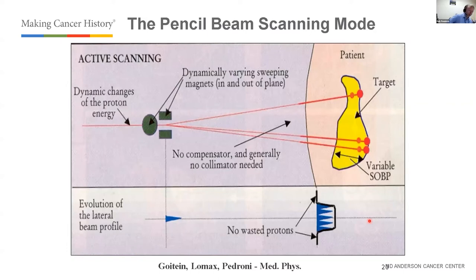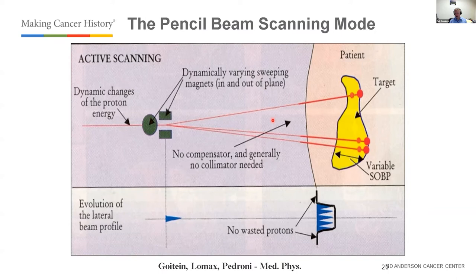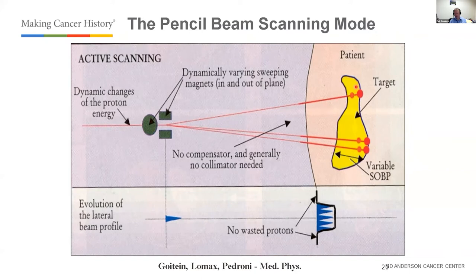For scanning beam, as shown in the Goitin and Lomax publication, two scanning magnets deflect the beam to desired lateral positions. The beam is delivered at the correct energy directly from the accelerator for each depth layer, with no patient-specific hardware blocking it — hence essentially no wasted protons, compared to the factor of 30 waste in passive scattering. You deliver the deepest energy layer first, then progressively lower energies, painting a 3D dose volume with individual spots.